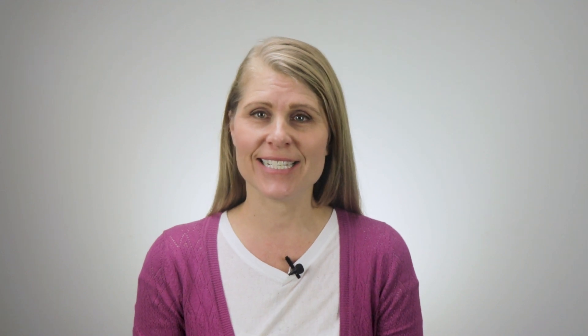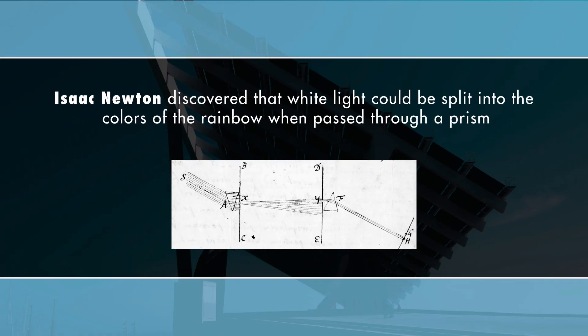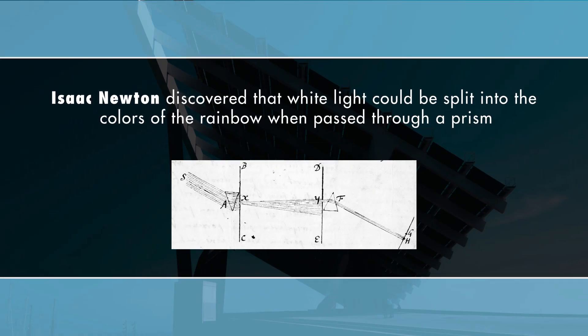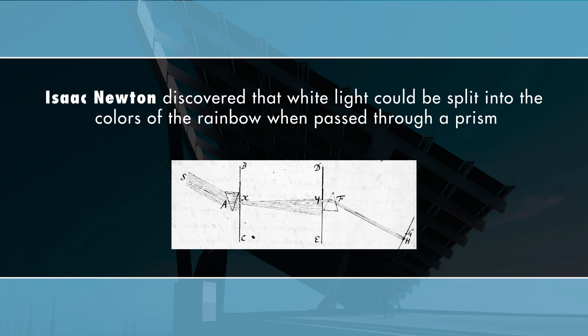History says that in 1665, Isaac Newton discovered that white light could be split into the colors of the rainbow when passed through a prism. In 1775, George Palmer proposed that there were three different receptors in the retina that could perceive hues of red, green, and blue.